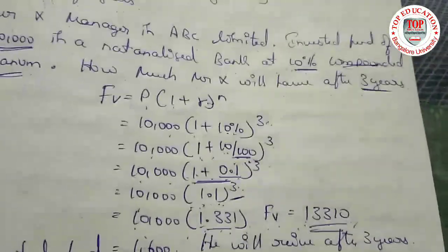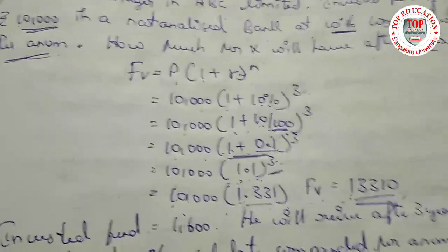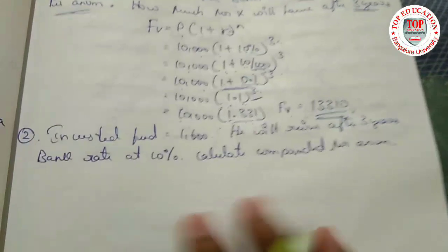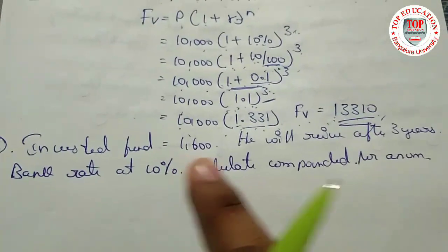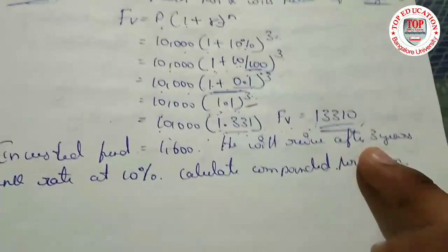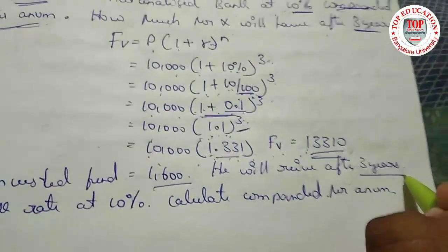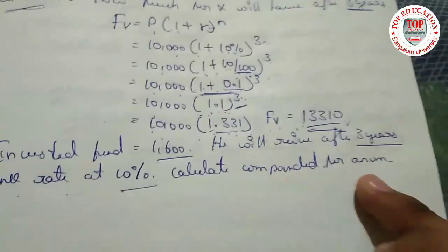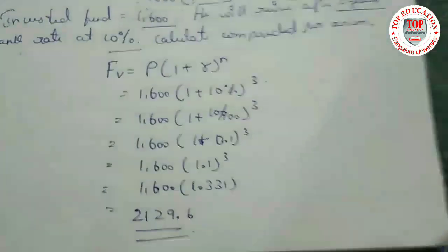Next sum: invested fund is rupees 1,600. He will receive it after three years. Bank rate is 10 percent. Calculate compound per annum. Let's solve this.